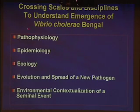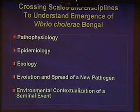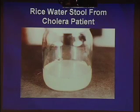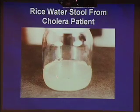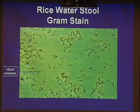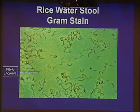The disciplines we'll proceed through briefly are pathophysiology, epidemiology, ecology, and the evolution and spread of a new pathogen. First, the disease: the typical rice water stool from a cholera patient is very similar to rinsing Asian rice a few times — you get a white opalescent rinse fluid, which is where the name comes from. If you put a drop on a microscope slide and stain it with a gram stain, you would see countless comma-shaped organisms: Vibrio cholerae, the organism responsible for cholera.